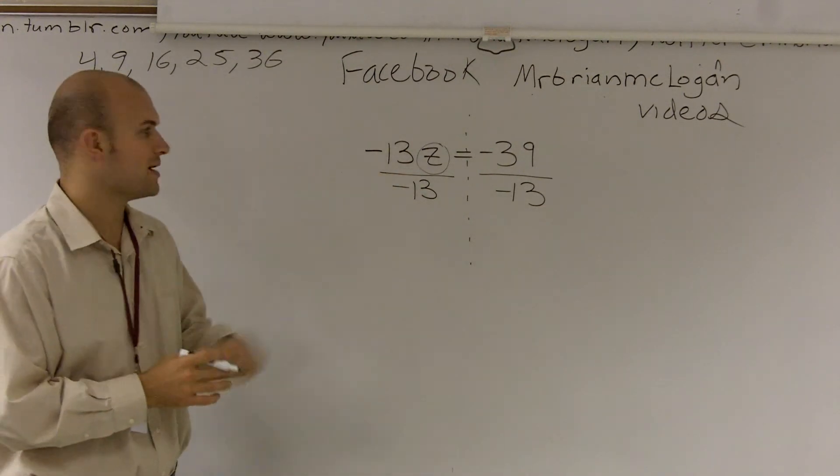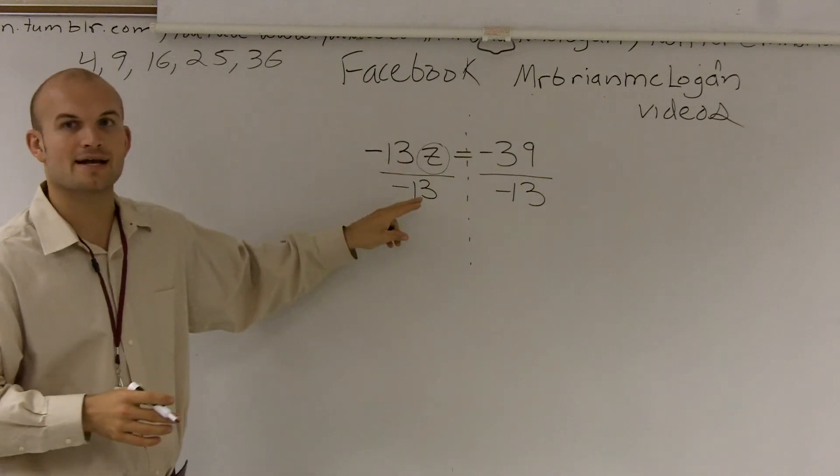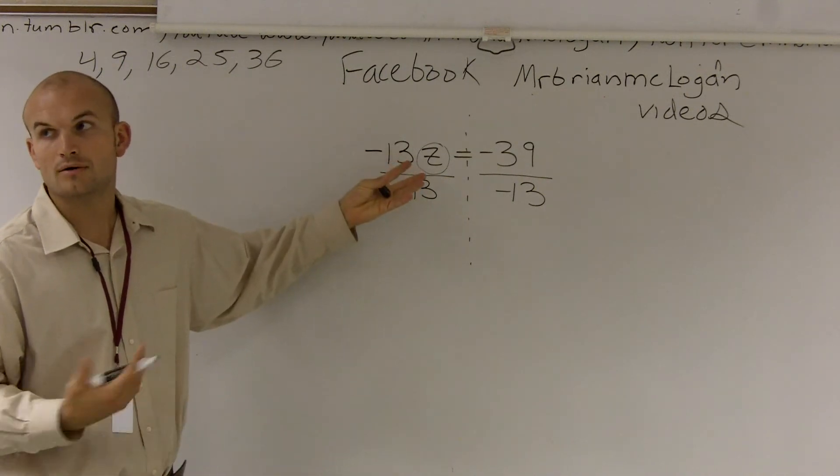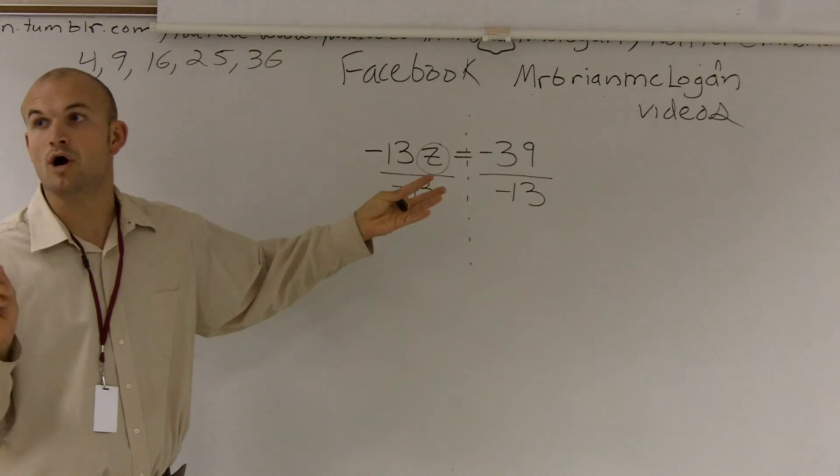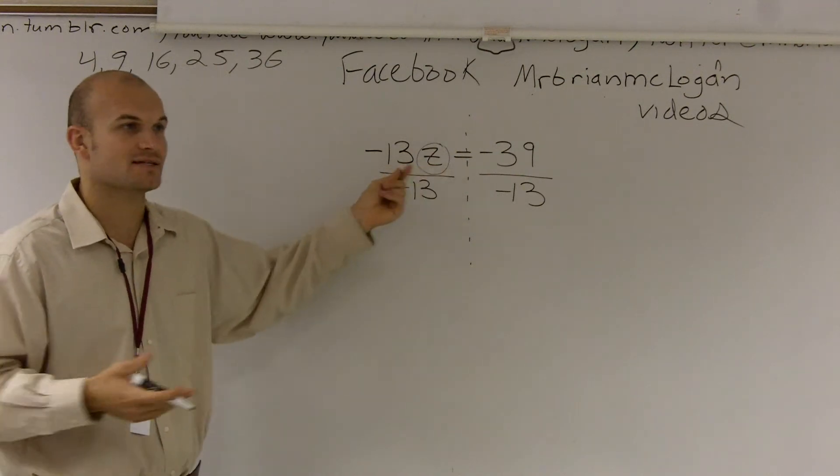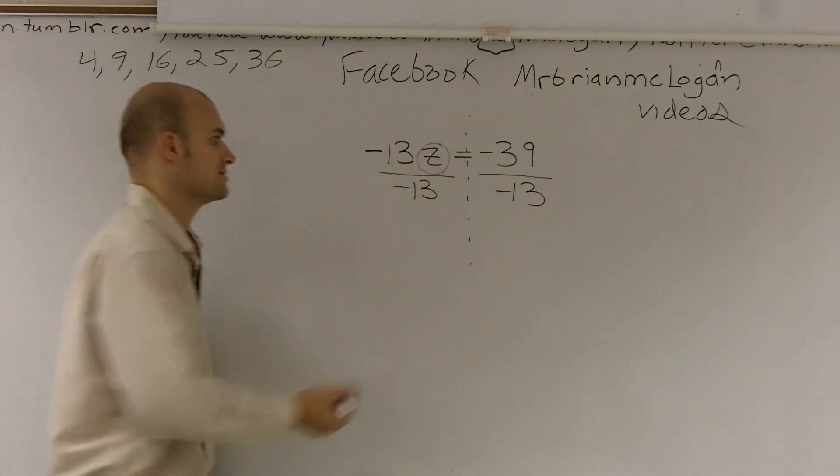So on the left side, now we have negative 13 divided by negative 13. Well, any number divided by itself gives you 1, right?